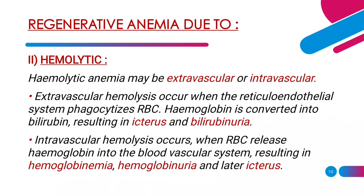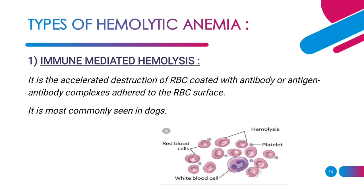Coming on to regenerative anemia due to hemolysis. Hemolytic anemia — that is destruction of RBC — may be extravascular, outside the blood vessel, or intravascular, within the blood vessel. Extravascular hemolysis occurs when the reticuloendothelial system phagocytizes the RBC, and hemoglobin is converted into bilirubin resulting in icterus and bilirubinuria. Intravascular hemolysis occurs when RBC release hemoglobin into the blood vascular system, resulting in hemoglobinemia, hemoglobinuria, and later icterus. Immune-mediated hemolysis involves accelerated destruction of RBC coated with antibody or antigen-antibody complex, and is most commonly seen in dogs.